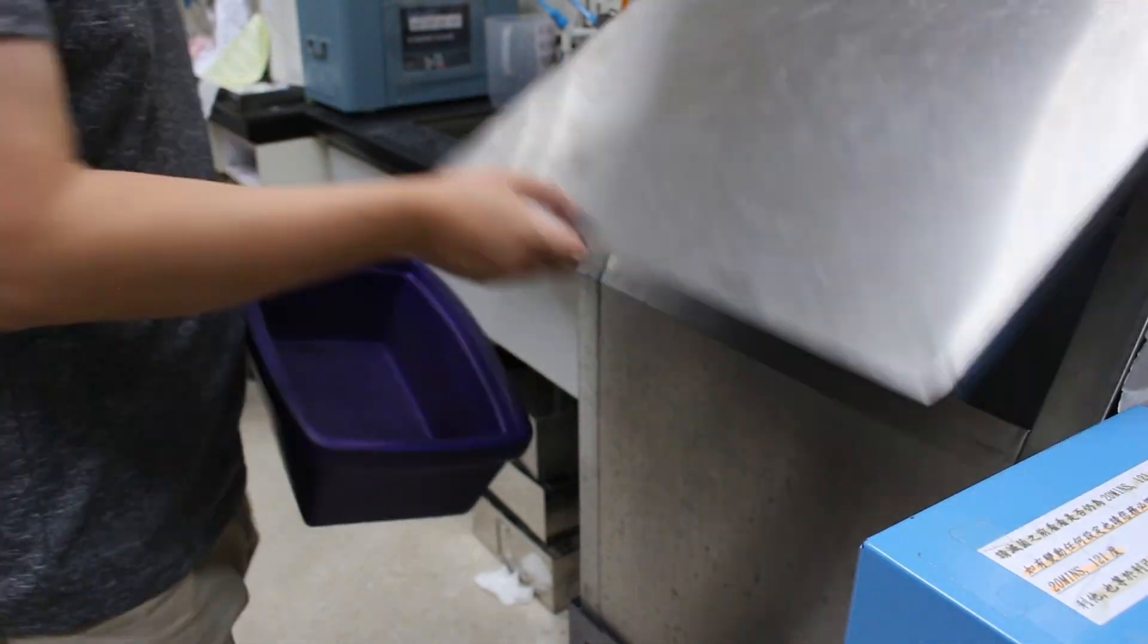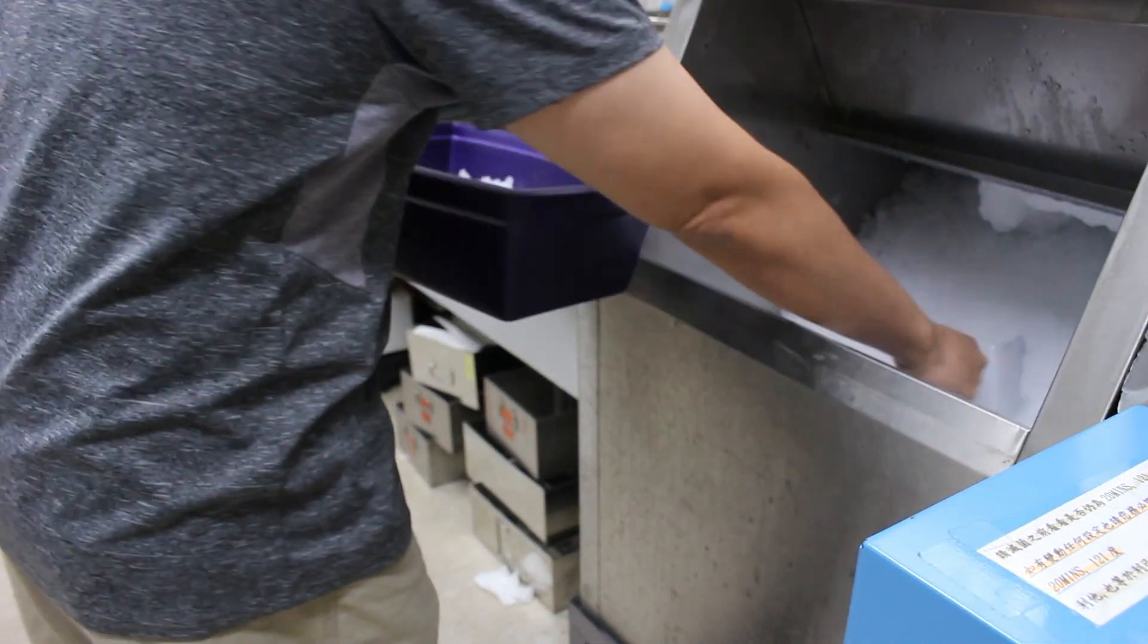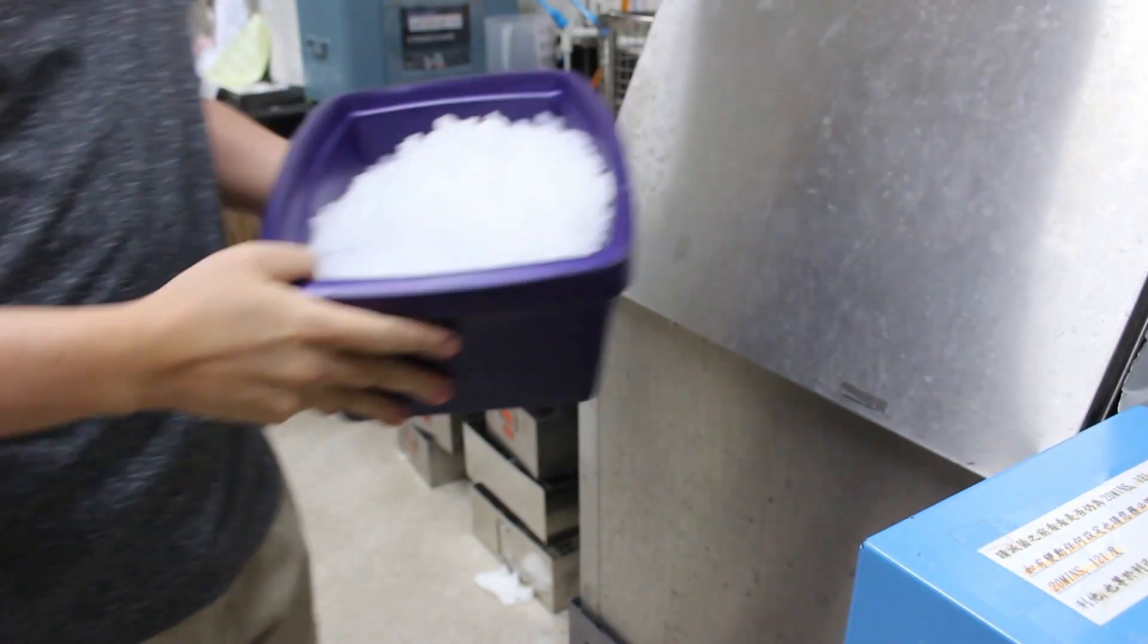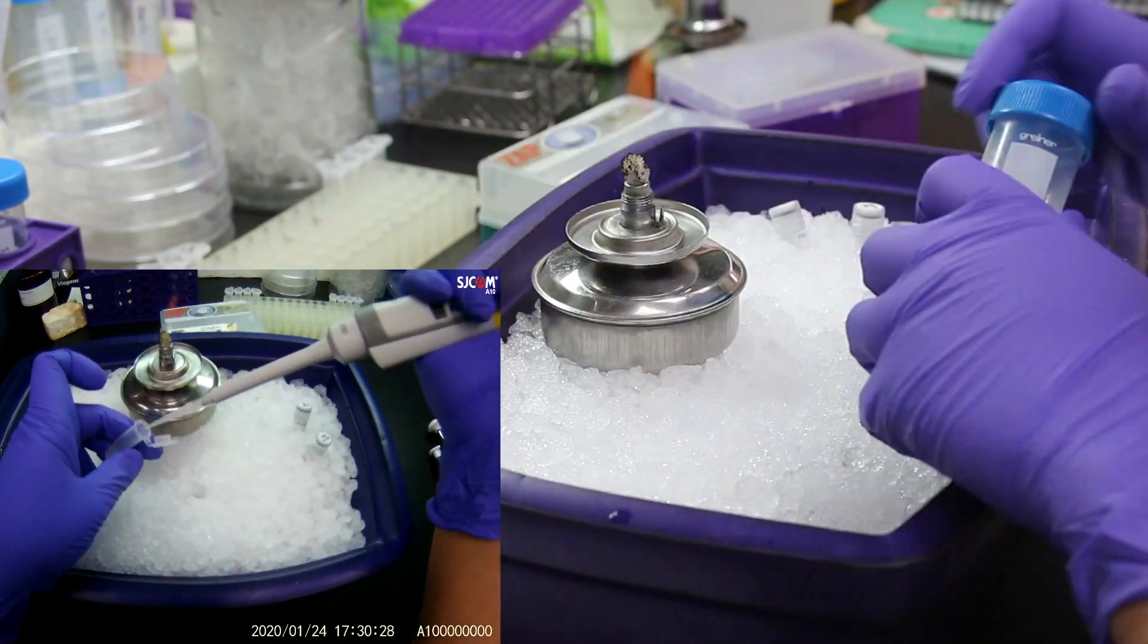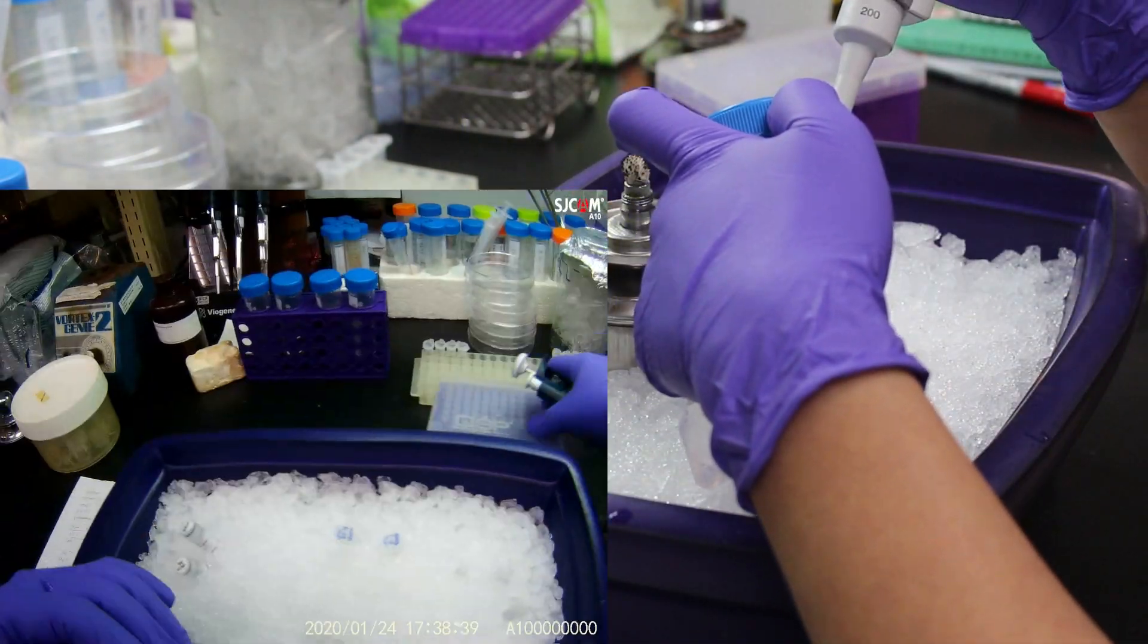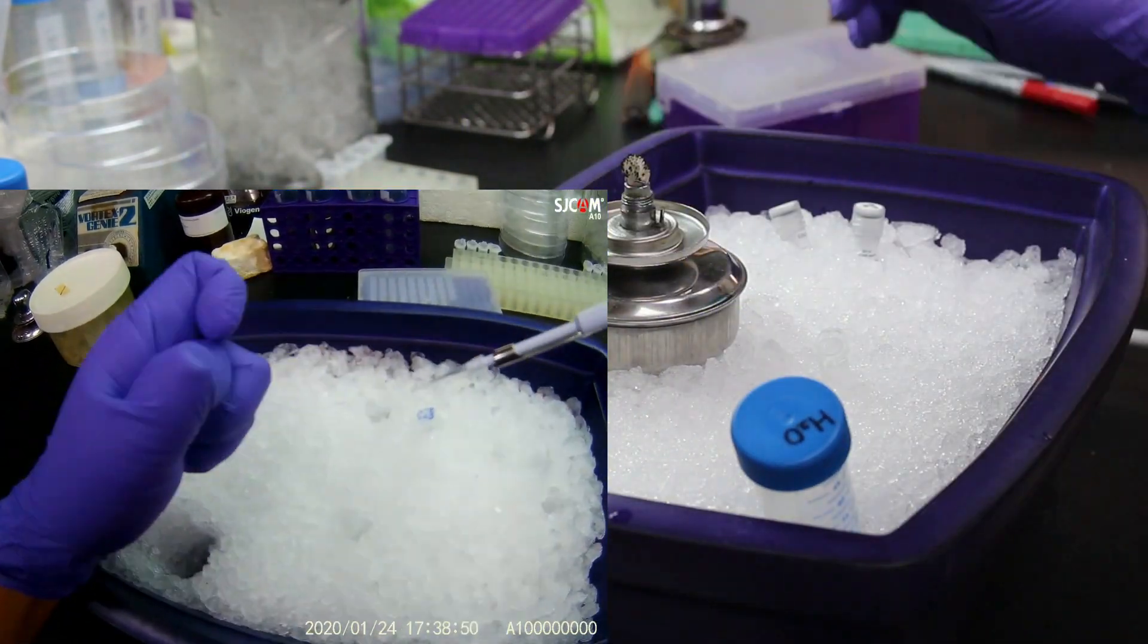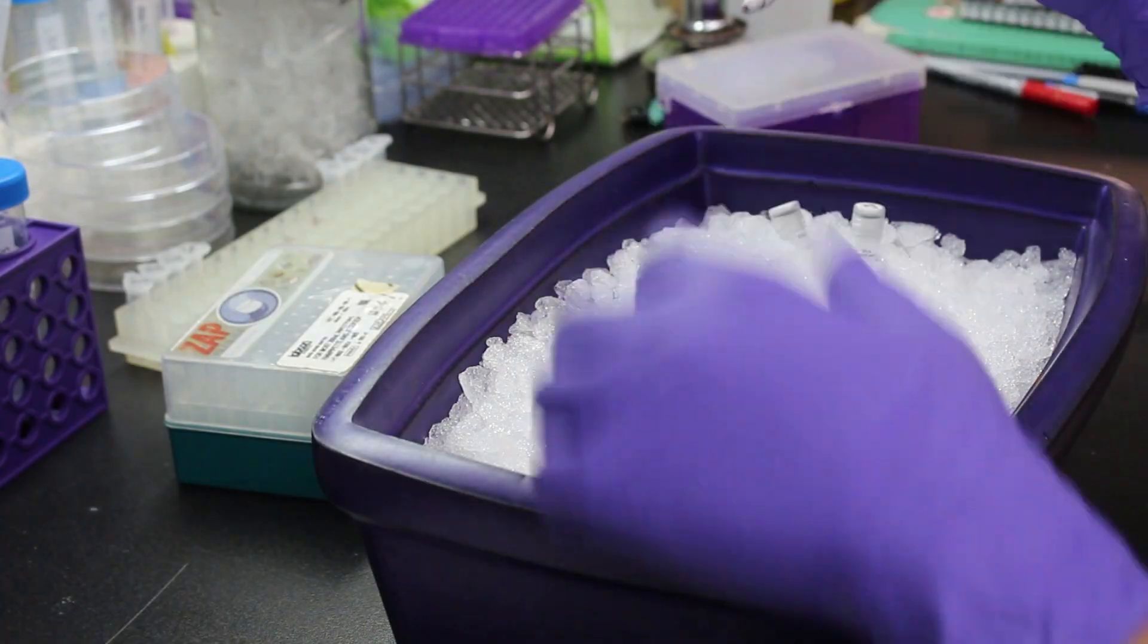Now, starting with scattering ice into ice bucket, because we want to keep the process in low temperature. Next, mix all the reagent in a centrifuge tube. I prefer adding water first and enzyme the last. It will be easier to mix evenly.